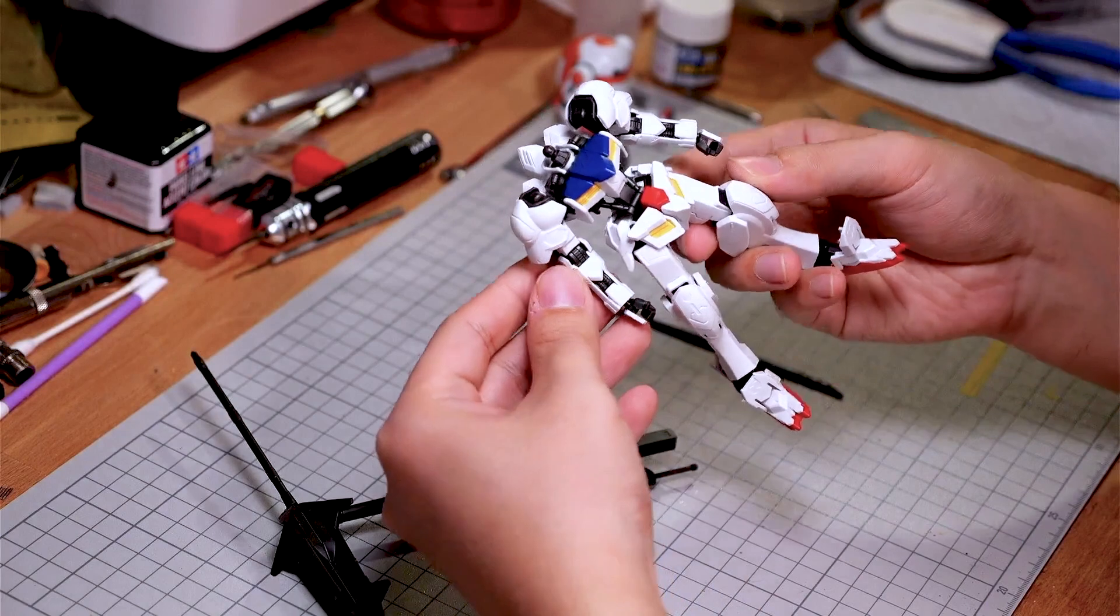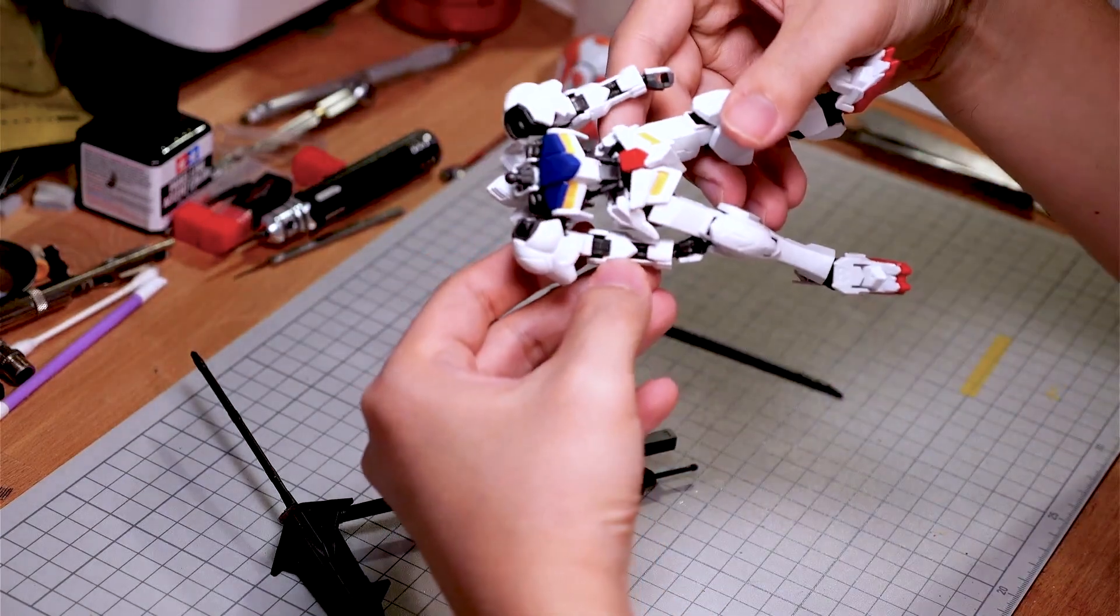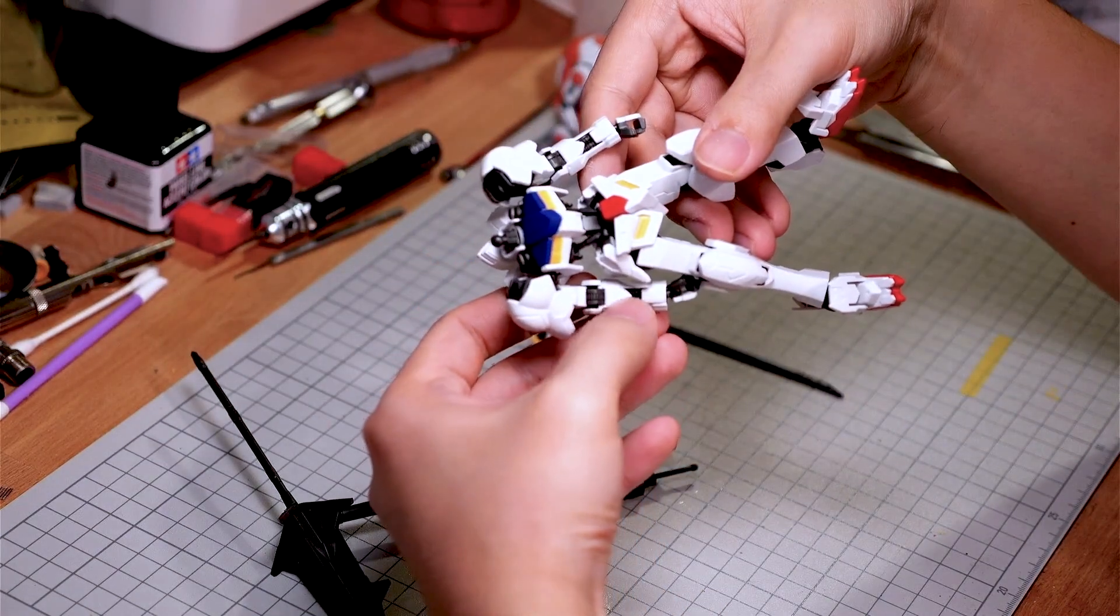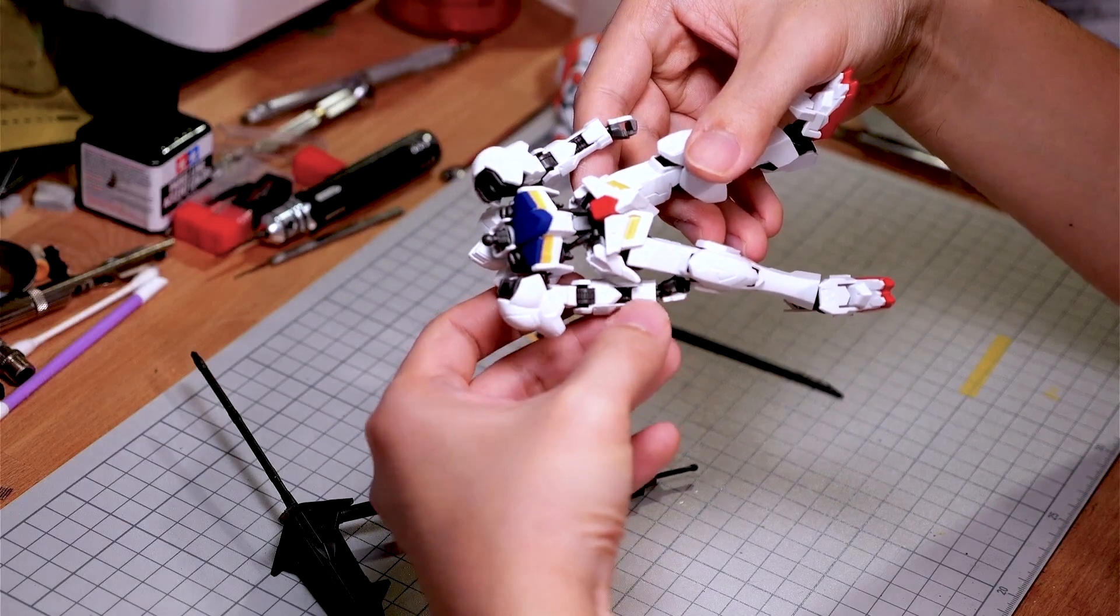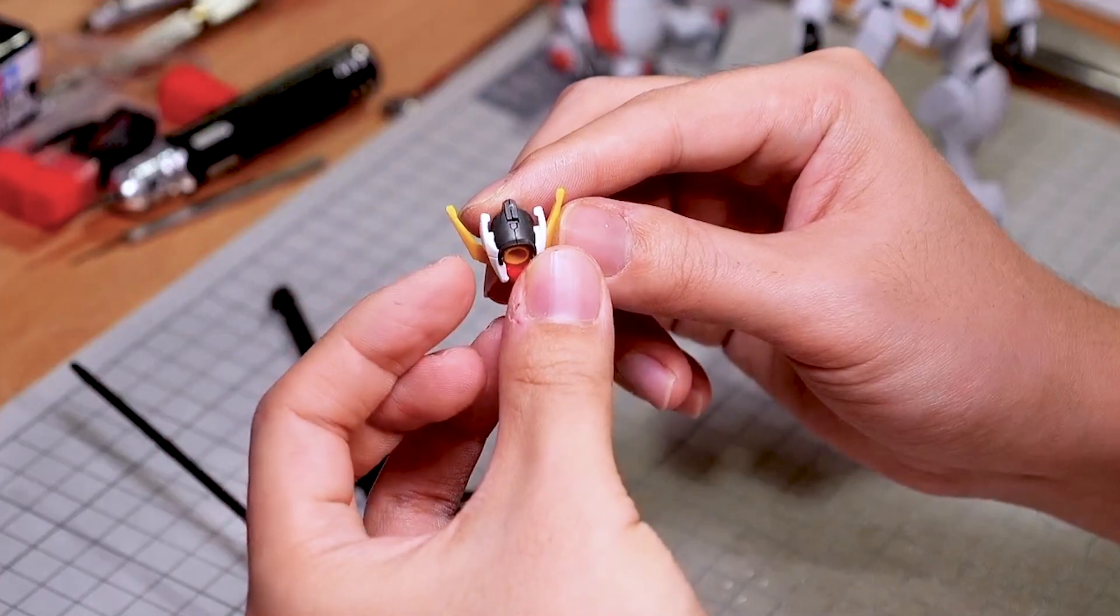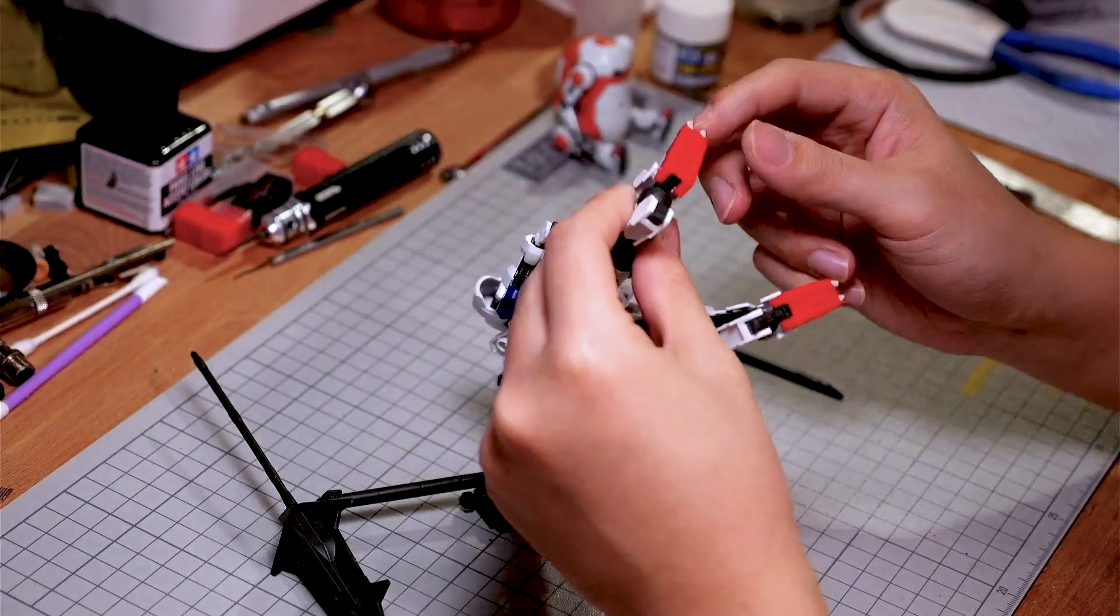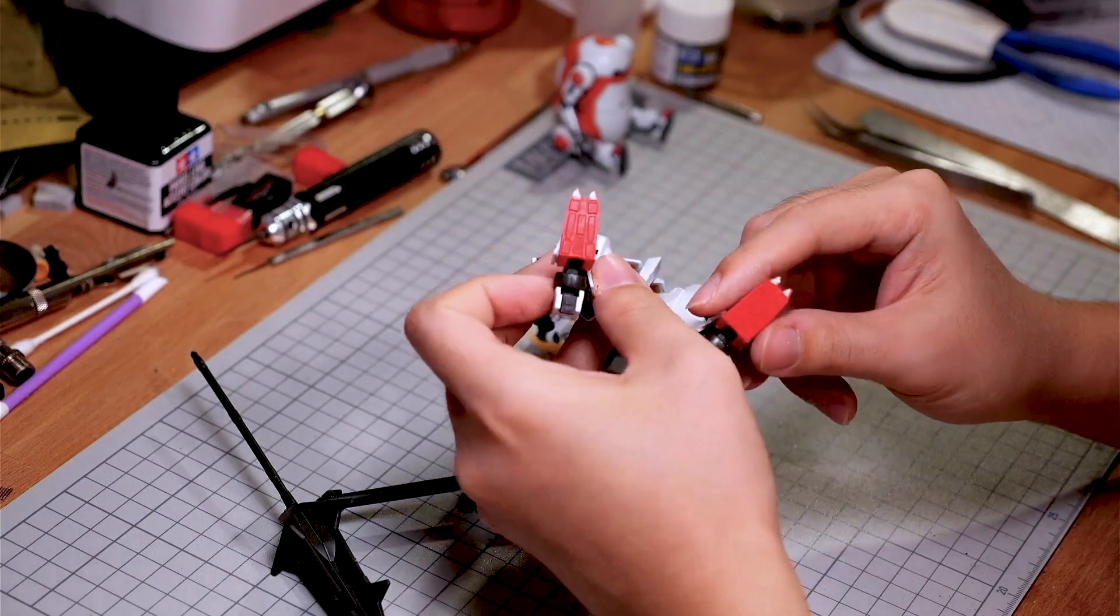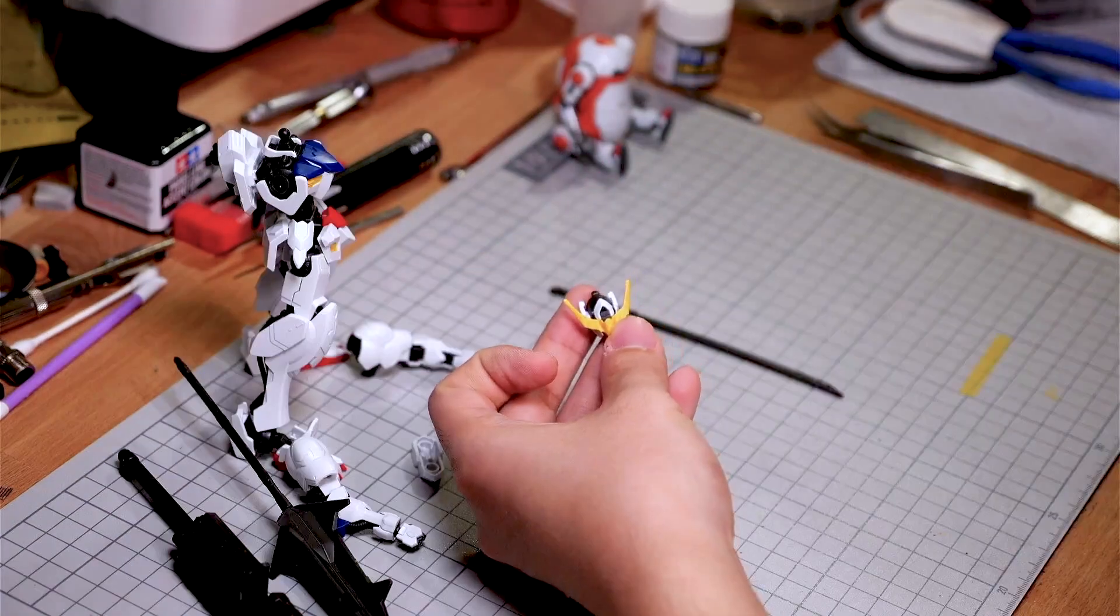Not a whole lot of seam lines to deal with here. A common issue on a lot of these later IBO kits is this middle seam line down the arm, and we got another one on the head. The only place to fill is these little tips of the toes, so that's pretty good. Let's start with dealing with the head.